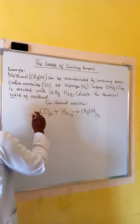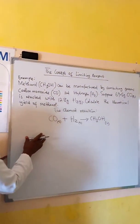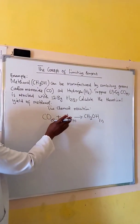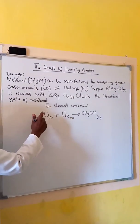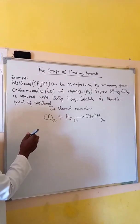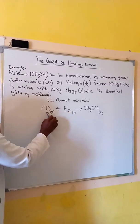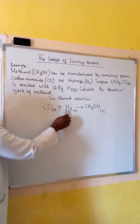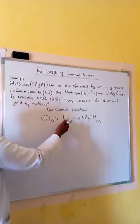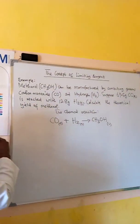The concept of limiting reagent, also known as limiting reactant, is defined as the one which runs out first and determines the amount of product formed. In this case, we will need to determine between carbon monoxide and hydrogen which of the two is the limiting reactant.